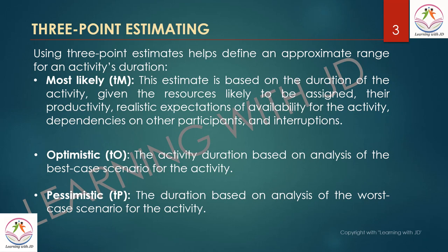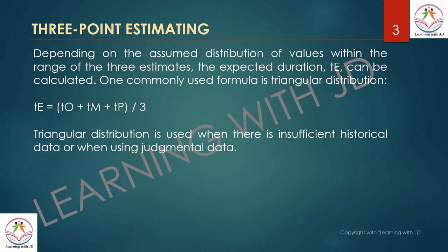There is a formula to find the three-point estimating value, which is TE (time estimate): TE = (O + M + P) / 3, where O is the optimistic figure, M is most likely, and P is the pessimistic figure. Using our example: (5 + 12 + 15) / 3 = 32 / 3 = 10.66. So as per three-point estimation, you will finish this activity in approximately 10.66 days.